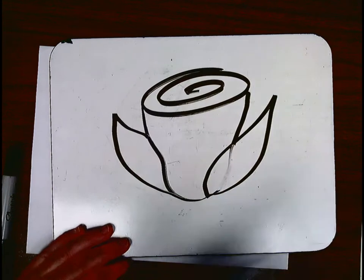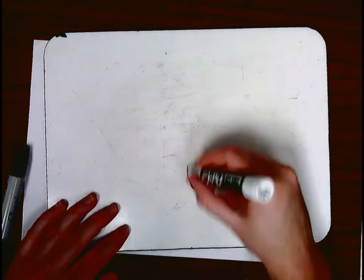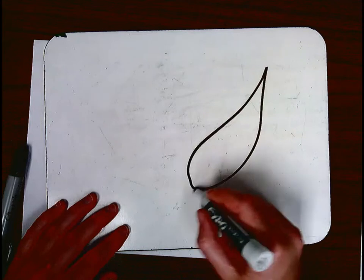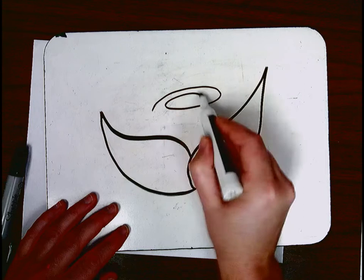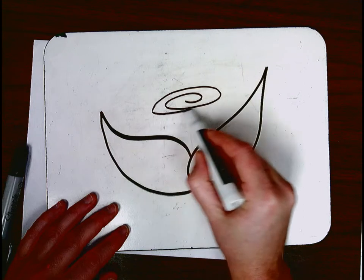There's one rose. Another way to do it: draw the petal first, draw the other petal, and then put the rose on the inside with a swirl and connect.